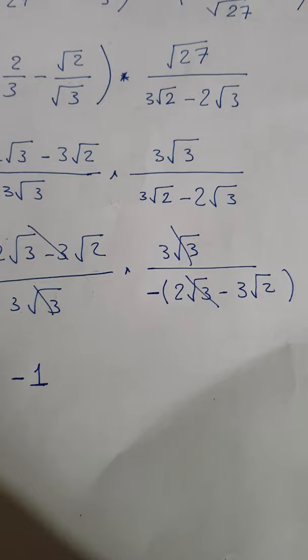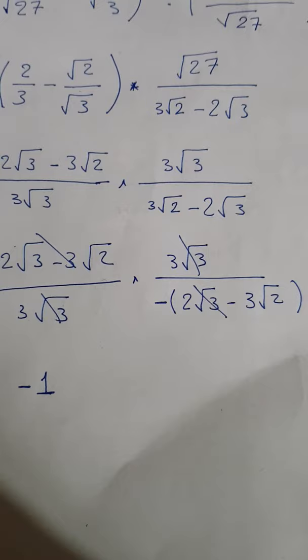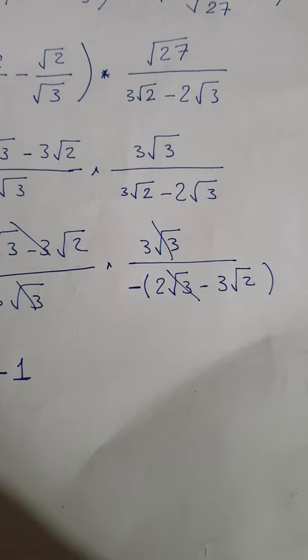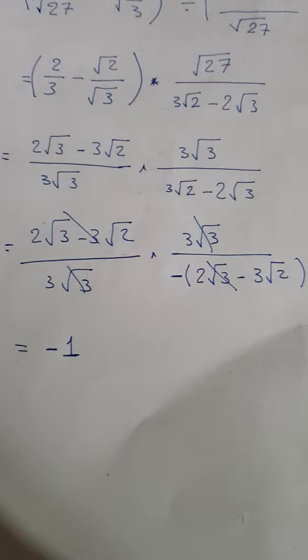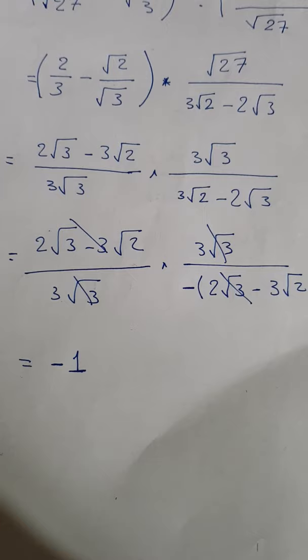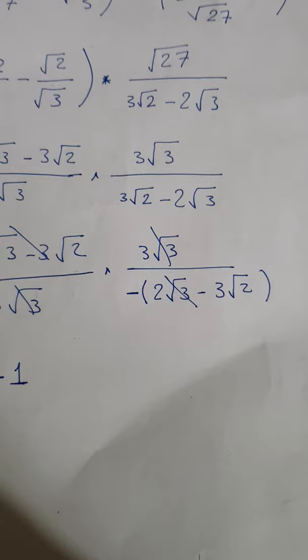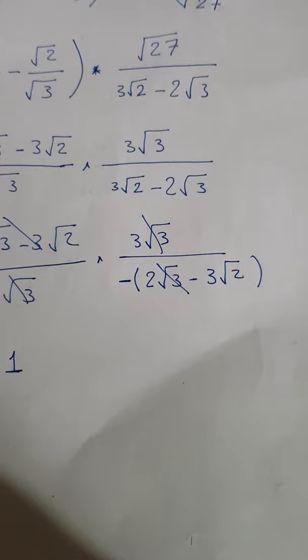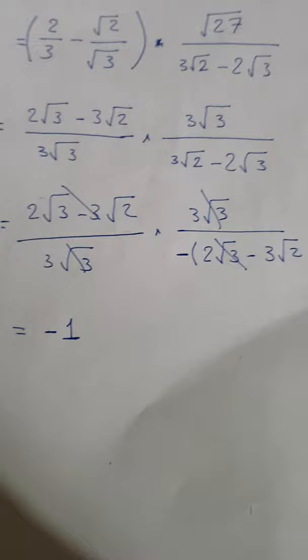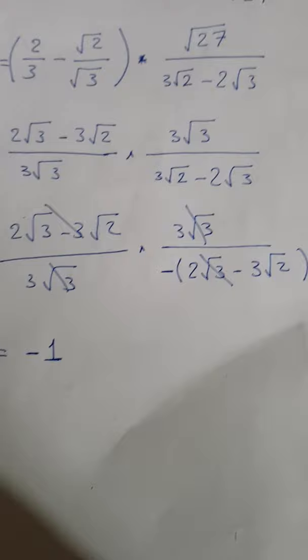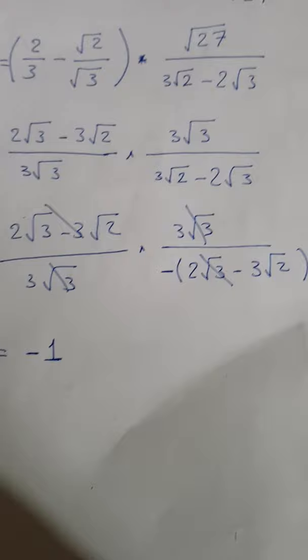We put a minus sign because we inverse the value. We have: three squared under the square root, minus two cubed under the square root. And we have two cubed under the square root, minus three squared under the square root. We delete — cancel — two cubed under the square root minus three squared under the square root with the matching terms, and three cubed under the square root cancels with the denominator. We have minus one. Why? Because we inverted the denominator value. Okay, and the answer is minus one-half. Thank you very much.